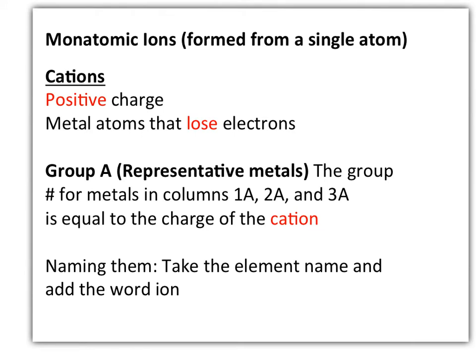Single atoms form monatomic ions. Remember that cations are positively charged, and they are formed when metal atoms lose electrons. There are two types of elements on the periodic table: the Group A elements, which are representative elements, and the Group B elements, which are called transition elements. We're going to focus on Group A representative metals, which are columns 1A, 2A, and 3A. We can come up with a charge for any element in these columns, because the charge number is equal to the group number next to the letter A.